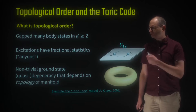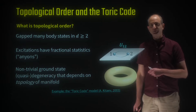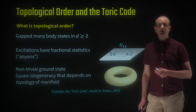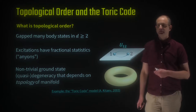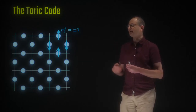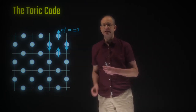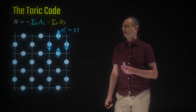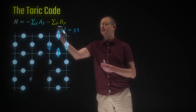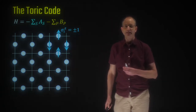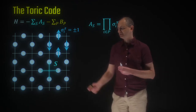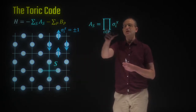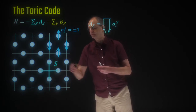The best way to illustrate this notion of topological order is through an example. There's a beautiful example written down by Alexei Kitaev, which is the so-called Toric code model — an exactly solvable model that we'll study in detail in this video. The Toric code model is defined on a square lattice. On every bond of the lattice, we place a spin-half particle. So we have a spin-half that can be up or down in the z basis. The Hamiltonian is composed of a sum of two types of terms called A_s and B_p. The A_s operator lives on stars — on every vertex of the square lattice we have this star, and A_s is simply the product of the sigma_x operators of the four spins that live on the corners of this star.